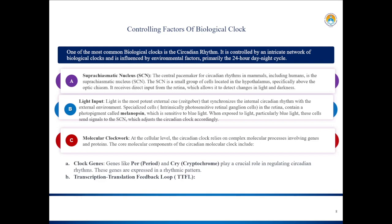The suprachiasmatic nucleus is a group of cells located in the hypothalamus above the optic chiasma. Even when isolated from external time cues, it continues to generate rhythmic patterns, maintaining the body's internal sense of time. It coordinates with various glands to produce hormones which control body temperature, sleep-wake cycle, with melatonin being one of the most important. The suprachiasmatic nucleus also controls the peripheral clocks present in tissues and organs throughout the body.